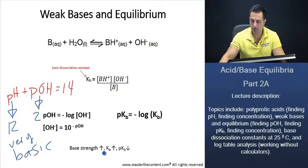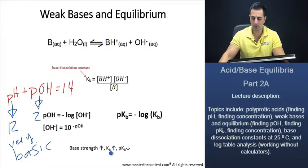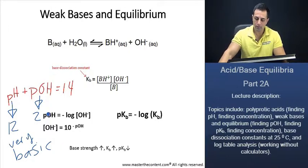So as base strength increases, your base dissociation constant will increase, which makes sense because the base is a stronger base. Furthermore, your PKB value will decrease, which also makes sense just as your POH value decreases.